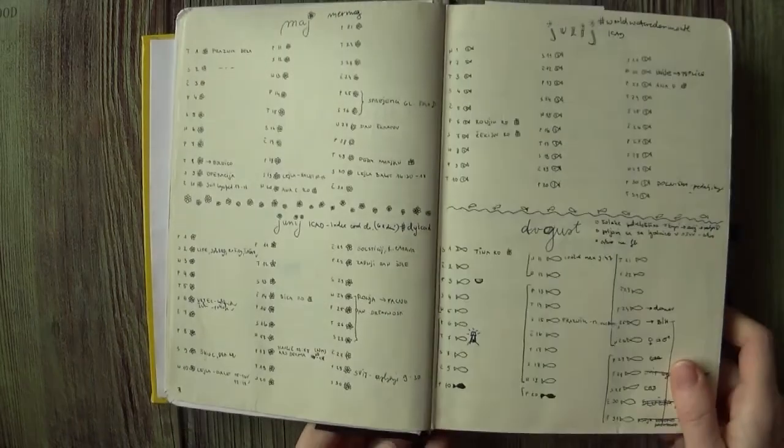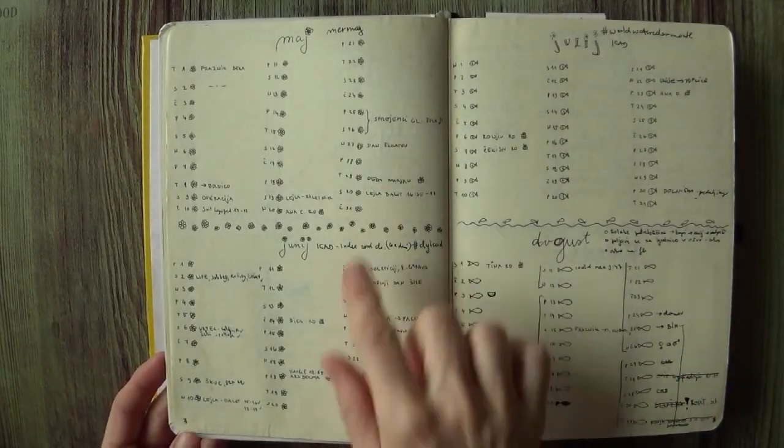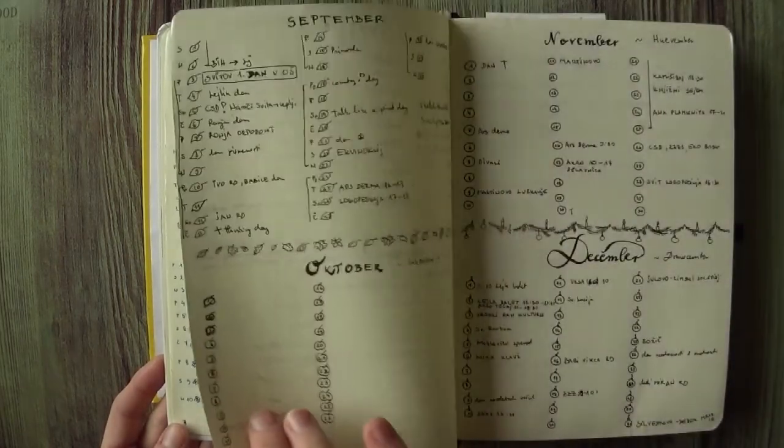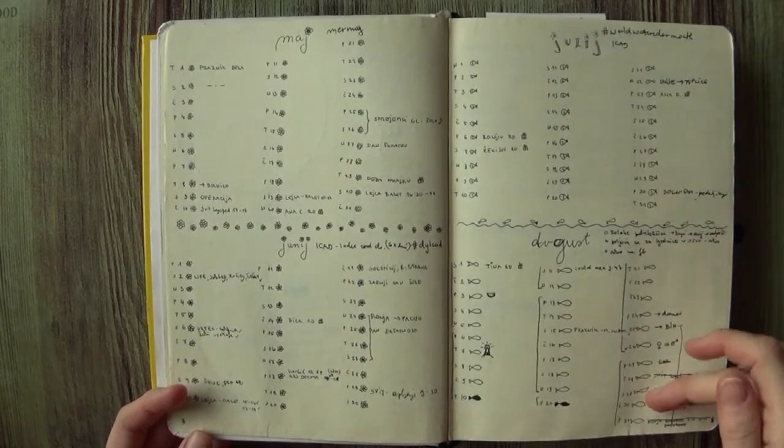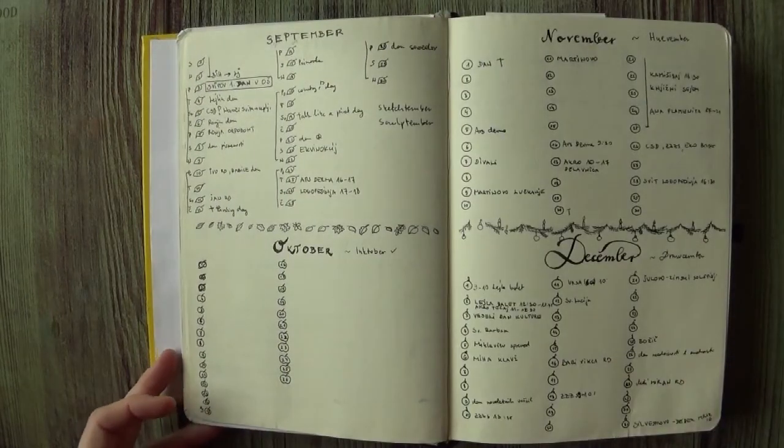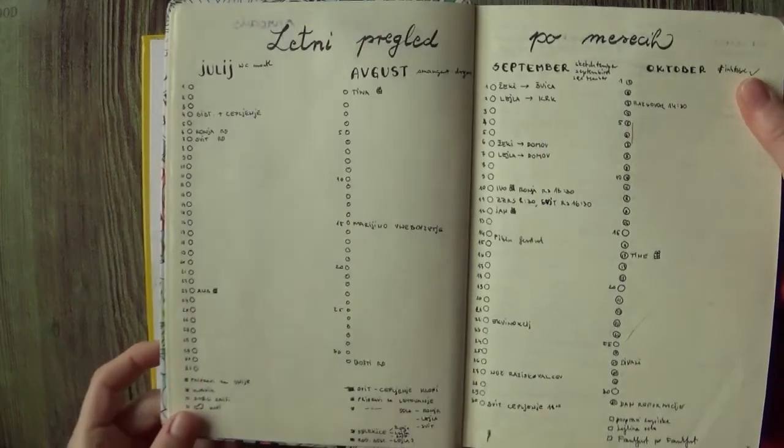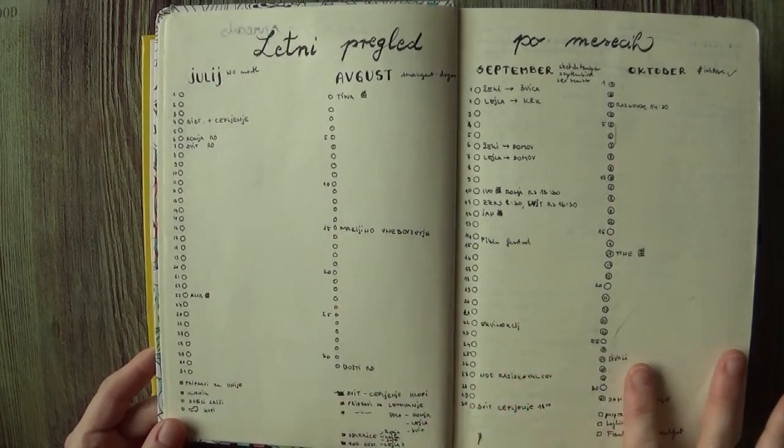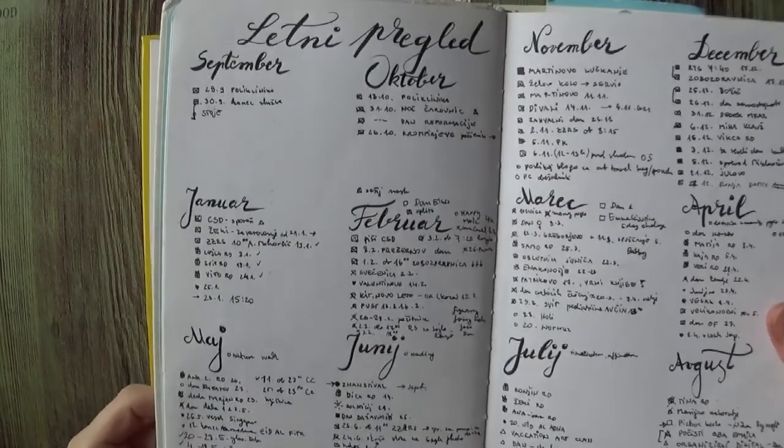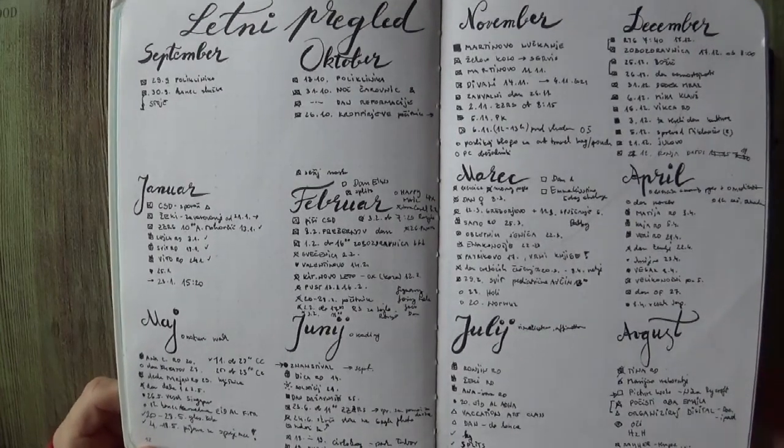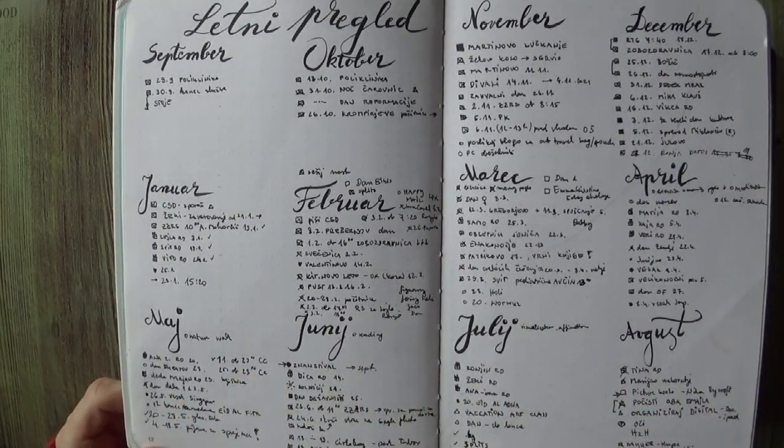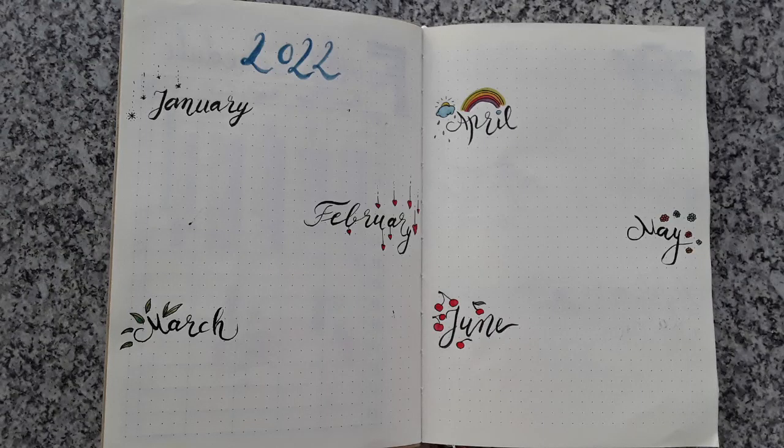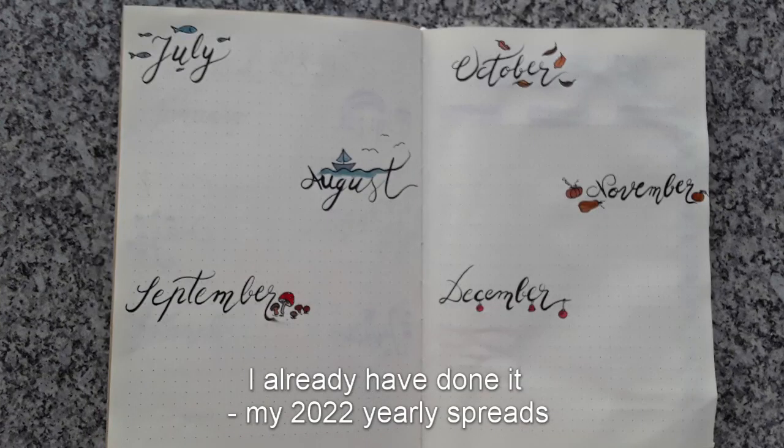So in my next bullet journal, I used more space and I made four months per two page spread. Then I tried another variation, a vertical, also four months per two page spread. And then I also tried again to fit everything on one page, but it still didn't work. I thought maybe something changed during this time, but it hasn't. So in my next bullet journal, I will make more space for each month.